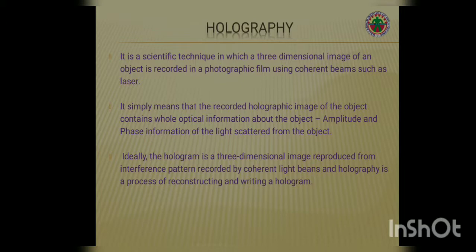What is holography? It is a scientific technique in which a three-dimensional image of an object is recorded in a photographic film using coherent beams, such as laser light. It simply means that the recorded holographic image of an object contains whole optical information about the object — that is, amplitude and phase information of the light scattered from the object. Ideally, the hologram is a three-dimensional image reproduced from an interference pattern recorded by coherent light beams, and holography is a process of reconstructing and writing a hologram.